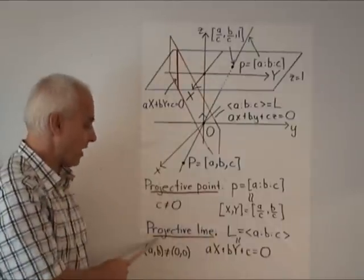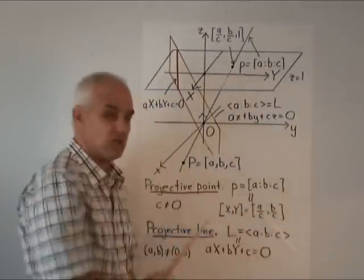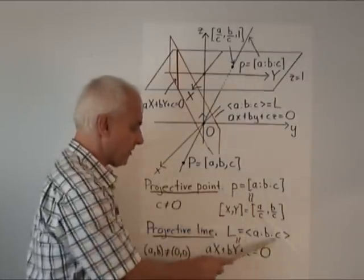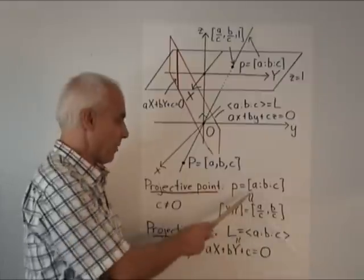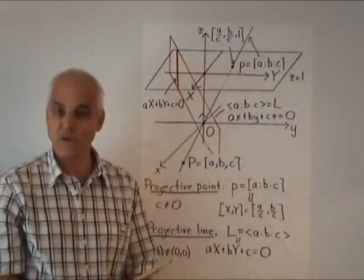The projective point, the projective line. And this description makes the symmetry between these two things obvious. Algebraically, projective points and projective lines are almost exactly the same. Except that we're enclosing one in square brackets and enclosing the other in pointy brackets.